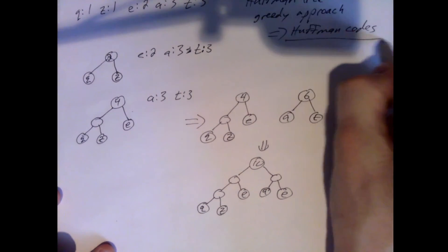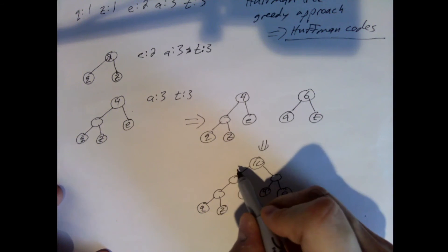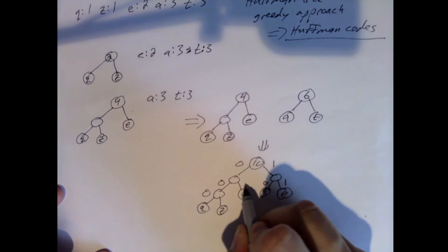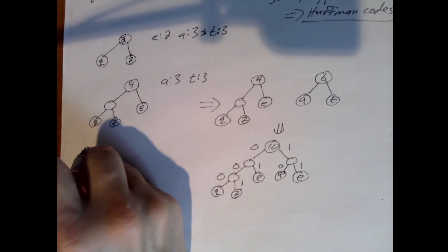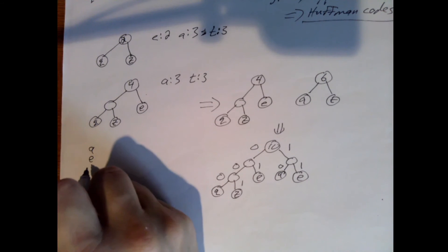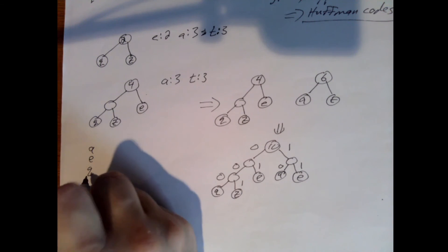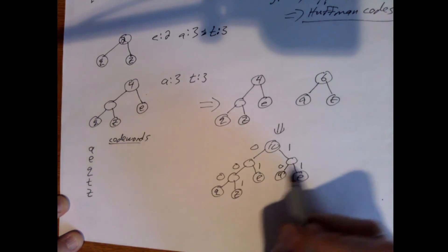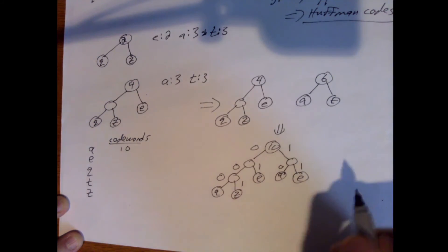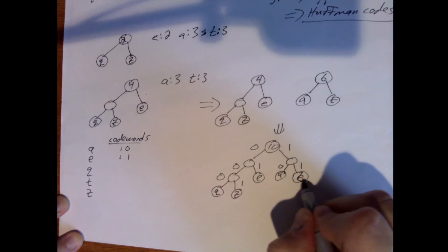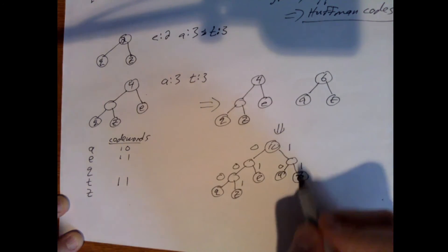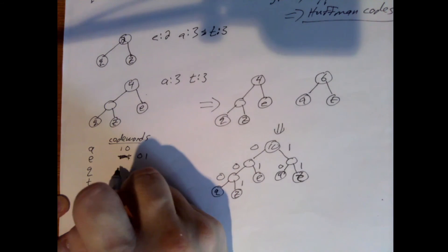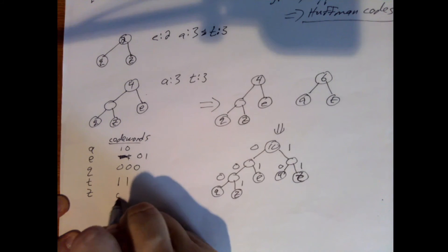To derive Huffman codes from the tree, we move down the tree and label every left branch with a 0 and every right branch with a 1. Going through the characters: A gets code word '10', T gets '11', E gets '01', Q gets '000', and Z gets '001'.